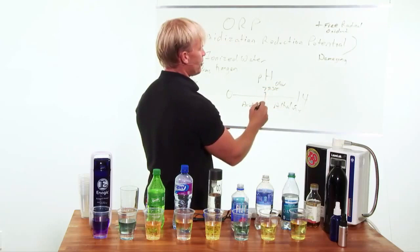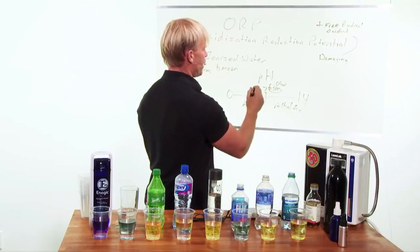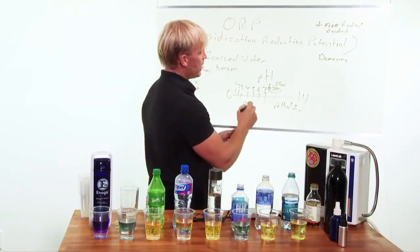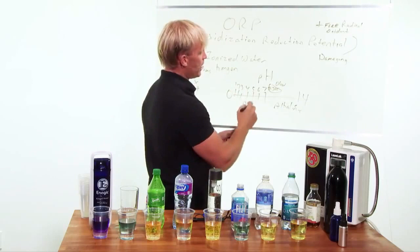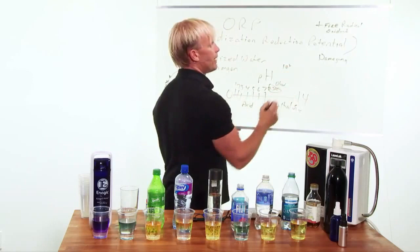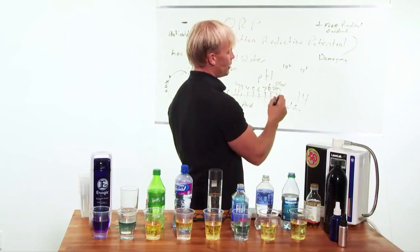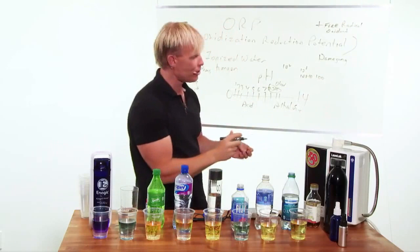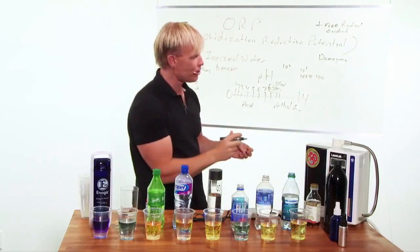But basically, just so you know, this is 7 right here in the middle. Human body is right about here. Let's say you go to 6, and then you go to 5, and 4, and 3, 2, 1. The difference between 7 and 6 is times 10. The difference between 7 and 5 is 10 times 10. So, this is a logarithmic by 10, Log 10. You understand that. So, what that means is, also on the other way, it's log 10. The difference between 7 and 8 is times 10. The difference between 7 and 9 is 10 times 10. So, it's 100 times more alkaline. So, you can see, just a very small movement is a big difference.